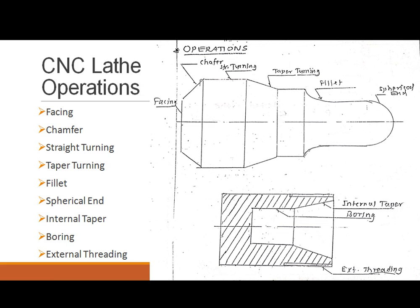We will be doing most of these operations — facing, straight and taper turning along with the fillet. These operations reduce the diameter of the workpiece, while facing reduces the length. We will also see the external threading operation using the canned cycle repeat motion on the lathe machine centre.